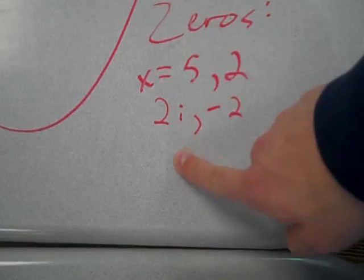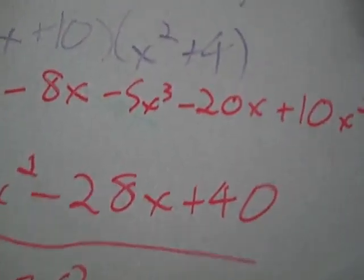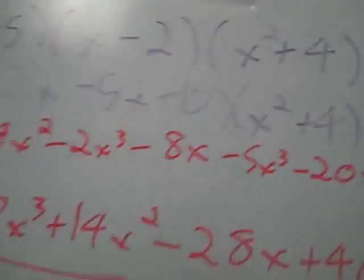Our zeros are 5, 2, 2i, and negative 2i. But the negative 2i and the 2i don't show up on the graph. They're imaginary.